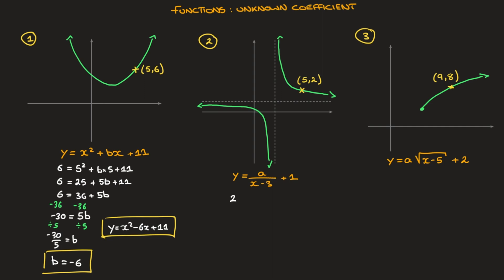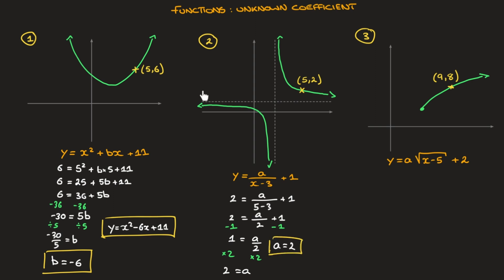Replacing y by 2 and x by 5, this becomes 2 equals a over (5 minus 3) plus 1. That leads to 2 equals a over 2 plus 1. Subtracting 1 from both sides gives 1 equals a over 2. Since a is being divided by 2, I multiply both sides by 2, which gives 2 equals a — in other words, a equals 2. So this curve's equation is y equals 2 over (x minus 3) plus 1.